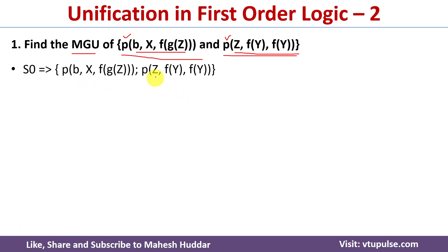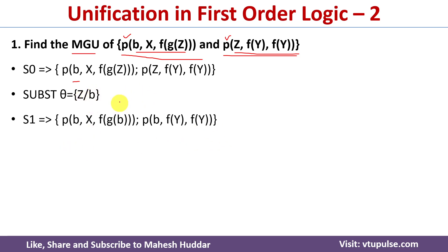First, I will replace z by b. So theta includes z → b. Once I replace z by b, in the first expression the z is replaced with b, and similarly the z in the second expression is also replaced with b.